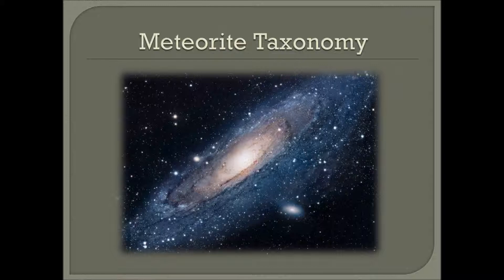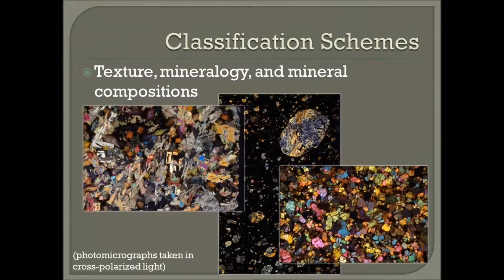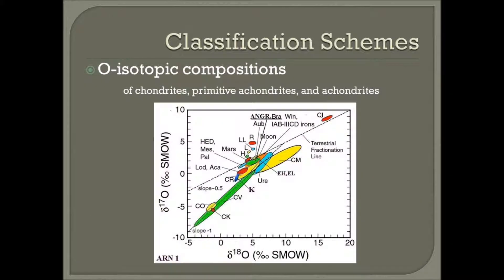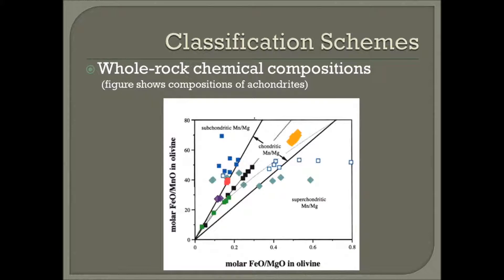Classification schemes are subject to three sets of criteria: texture, mineralogy, and mineral compositions; oxygen isotopic compositions; and whole rock chemical compositions, which is the scheme that has been used the longest.